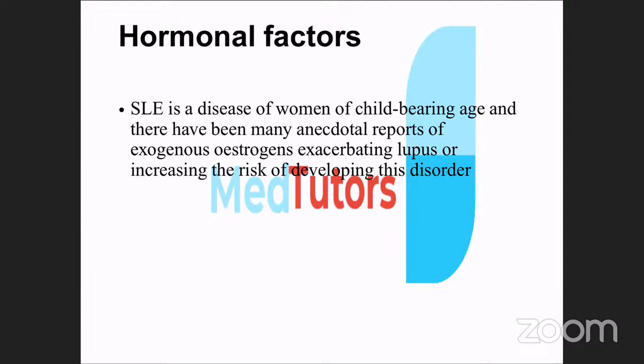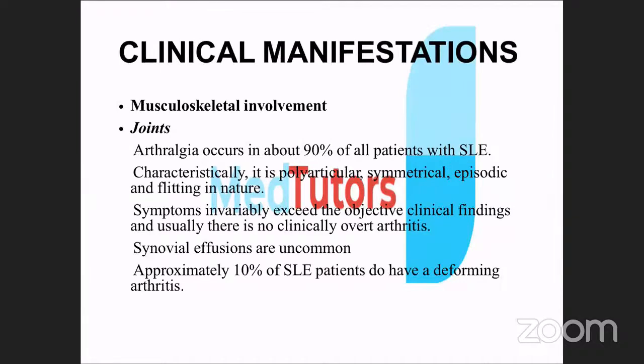Regarding clinical manifestations, all systems of the body can be affected. The musculoskeletal system: joints are affected in 90% of patients, causing arthralgia — pain and swelling. The pattern is polyarticular, affecting multiple joints symmetrically in an episodic manner. Deformities are seen in about 10% of patients.